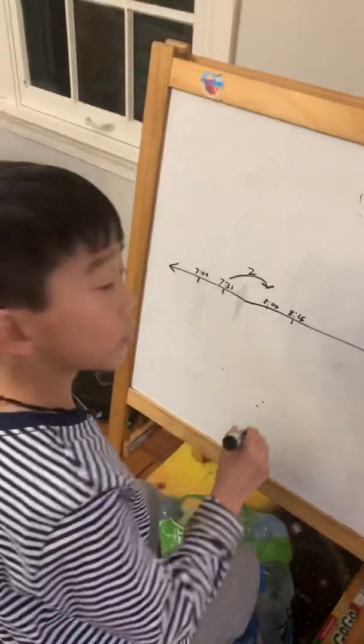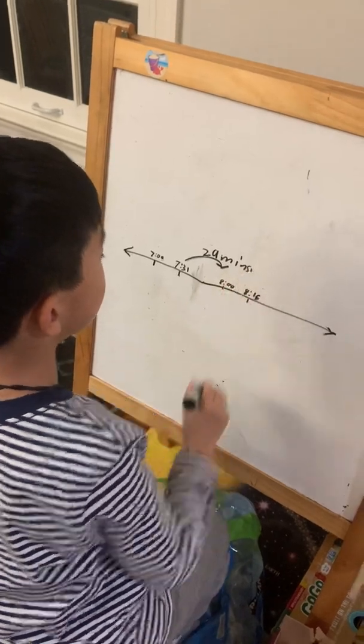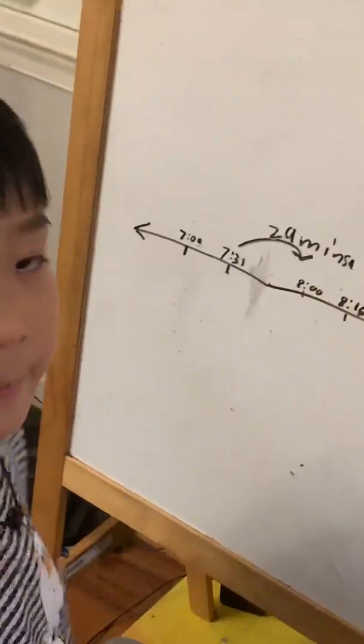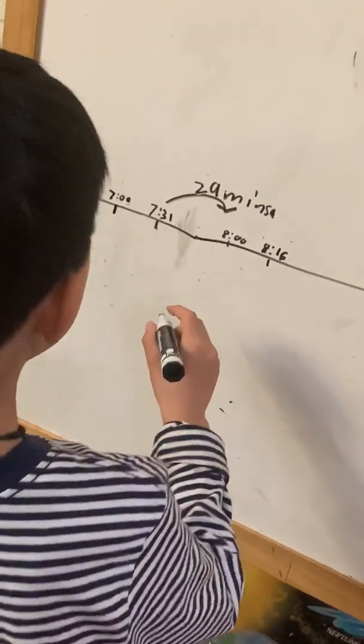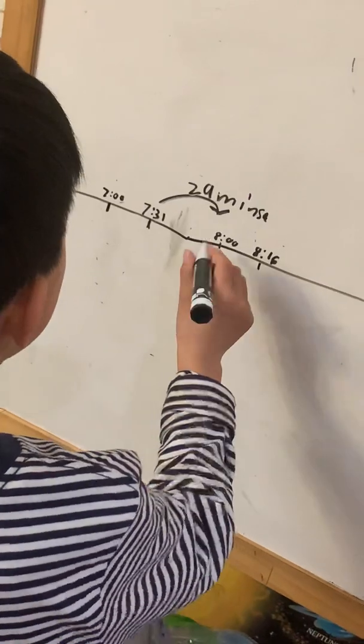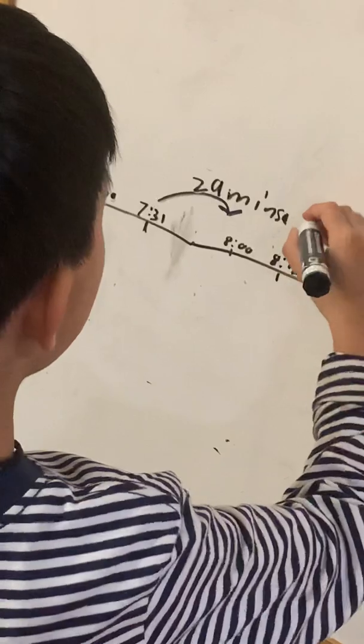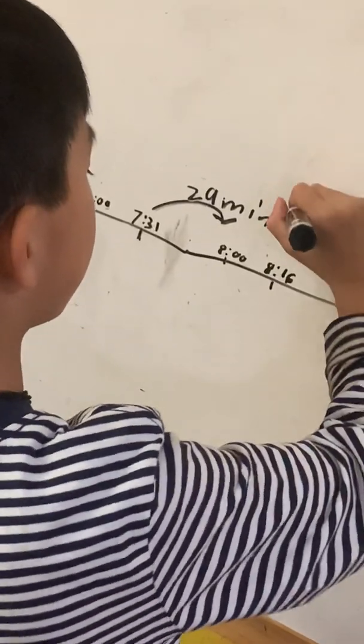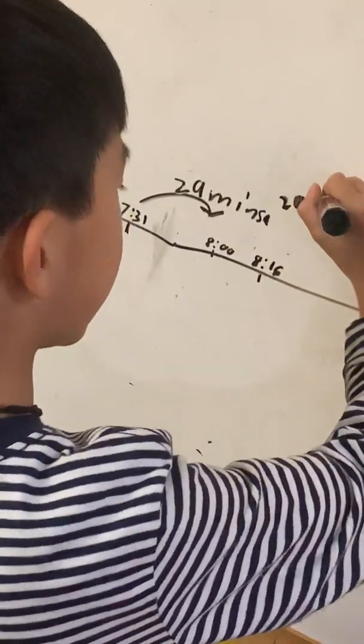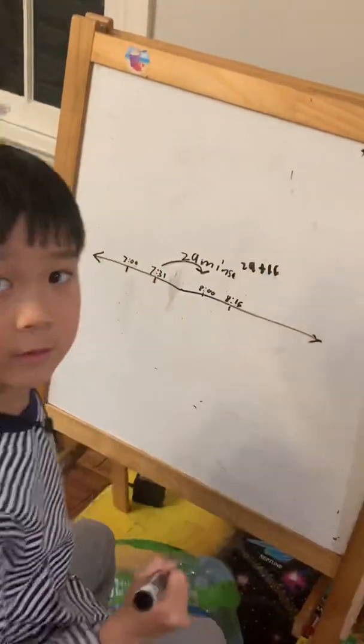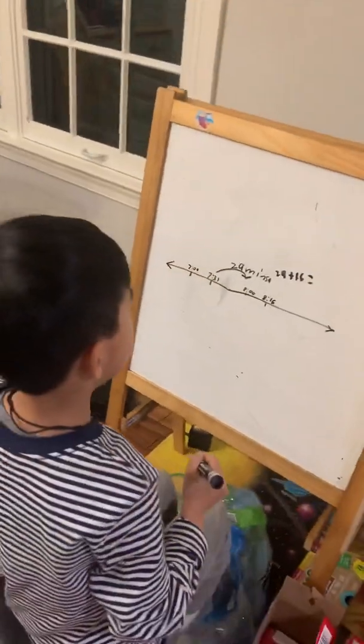Is it correct, 29 minutes? Is it 29 minutes? 29 minutes, and then right here, 29 minutes plus... and now we are going to do 29 plus 16, right?